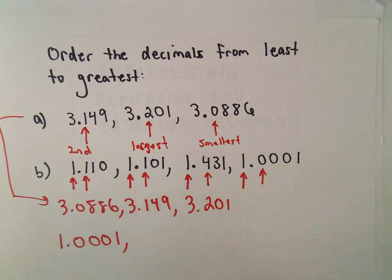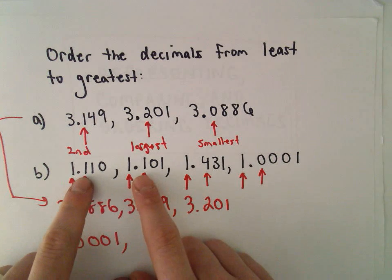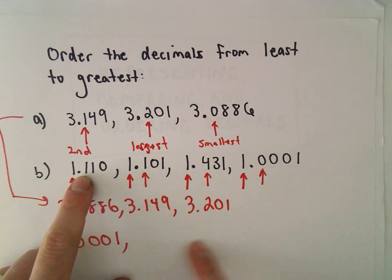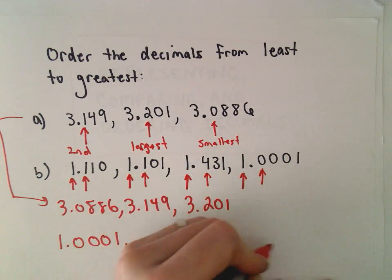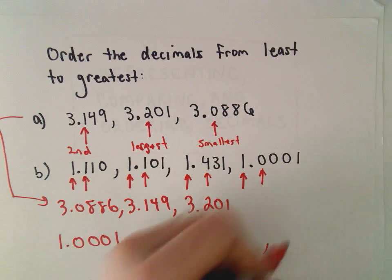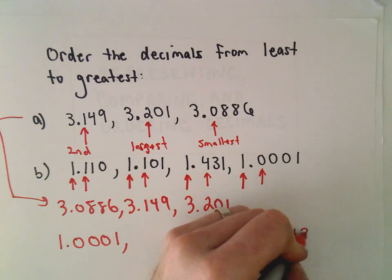So 0 is the smallest of all of those. So I know that the 1.0001 is going to be the very smallest number. Then we have 1s next. So the 1.1s should come next. I don't really know which one of those comes next yet, but I know that the largest one will be 1.431.